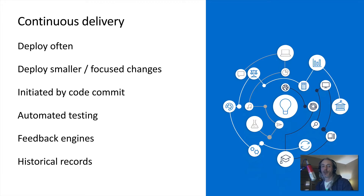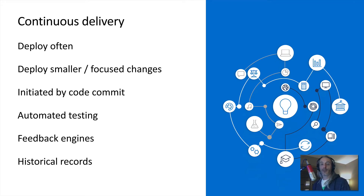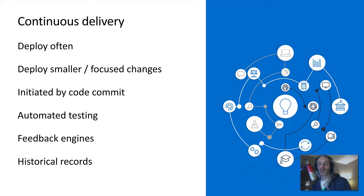I want to be able to understand which deployment created my current production environment. With this knowledge I can trace things back — configurations, test results, the code itself — all the way back to the individual pull request that triggered the deployment. I find this option for deployment far more enticing than an epic deployment.